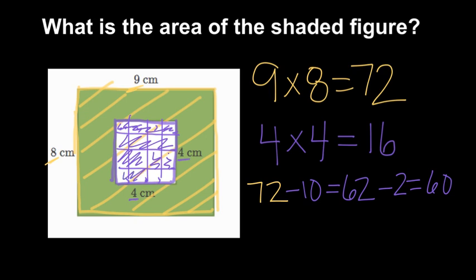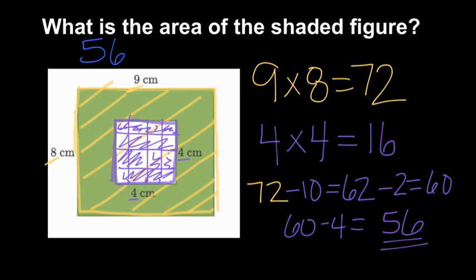And then there's four left to subtract in order to subtract all 16. So 60 minus four gets us to 56. So the entire area of 72, we subtracted out these 16 square centimeters, leaves us with a final area of 56 square centimeters.